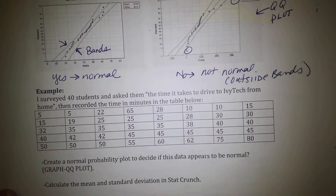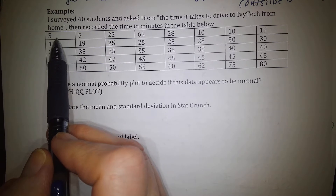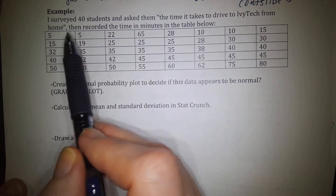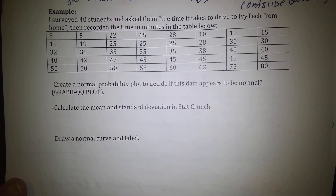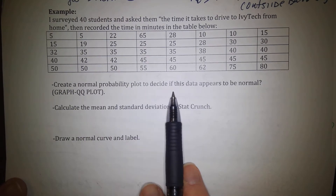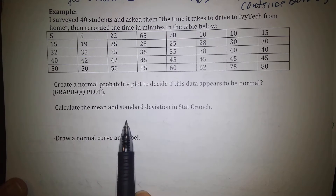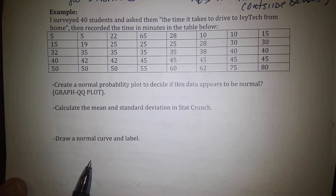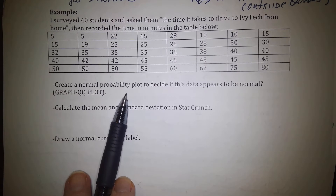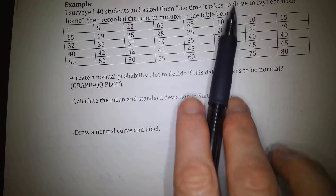Let's look at an example. I surveyed 40 students and asked them the time it takes to drive to Ivy Tech from home, and I recorded the time in minutes. So I asked the first student how long it takes to drive, and responses ranged — five minutes, five minutes, 22 minutes, and so on — recording all 40 students' data points. Then we're going to create a normal probability plot to determine if this data appears to be normal by going to Graph > QQ Plot. Then we'll calculate the mean and standard deviation. I can't draw the normal curve until I've verified that this data is indeed normal.